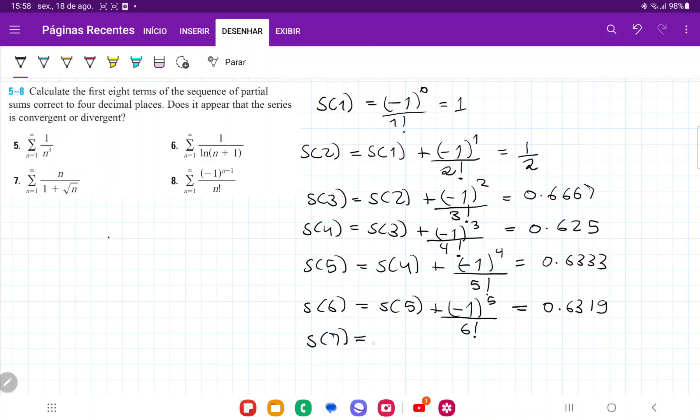S(7) is going to be the previous sum, S(6), plus (-1) to the power of 6 divided by 7 factorial. When we calculate this, we get 0.6321.